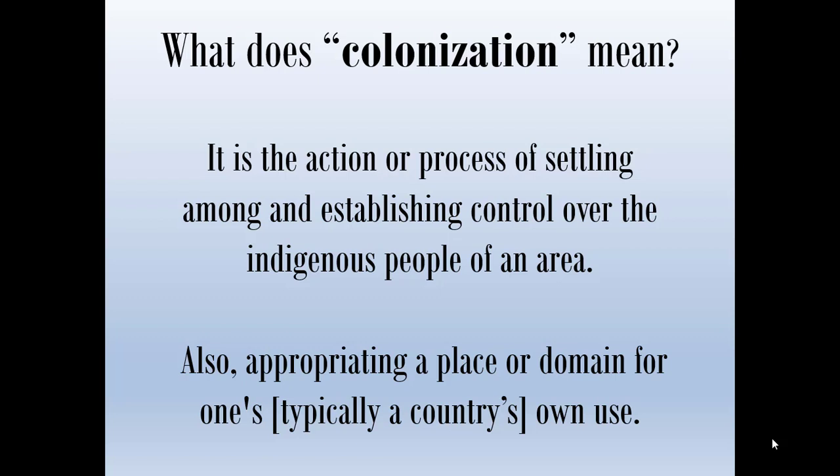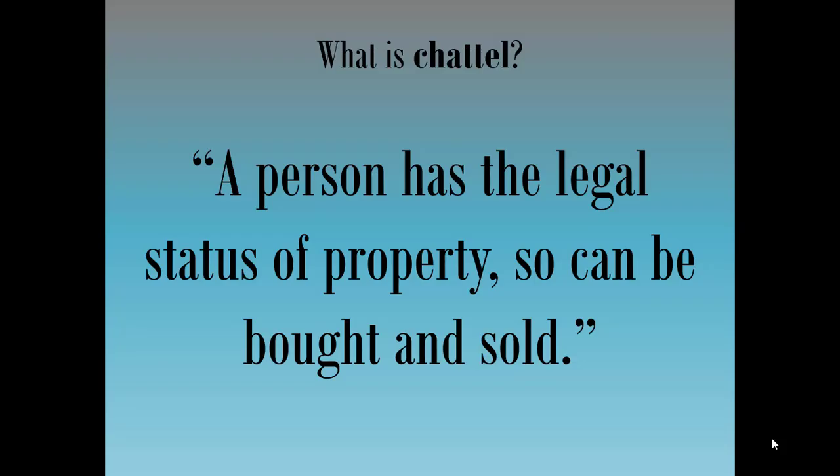Chapter two is also about the introduction of the institution of slavery, or what's called chattel slavery. Chattel is a word that means that you're property — a person has a legal status of property so they can be bought and sold. So if you're a slave, you're like a wagon — property. It doesn't matter that you've got blood coursing through you and you breathe. You're not seen as a person or a human. You're seen as an inferior species that's to be enslaved. So chattel means your property can be bought and sold.